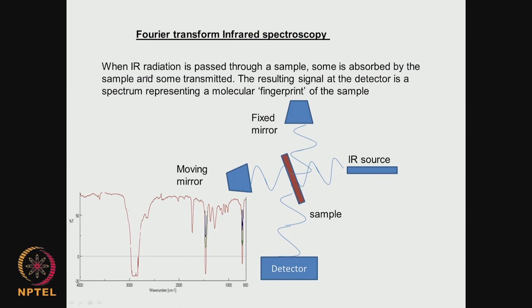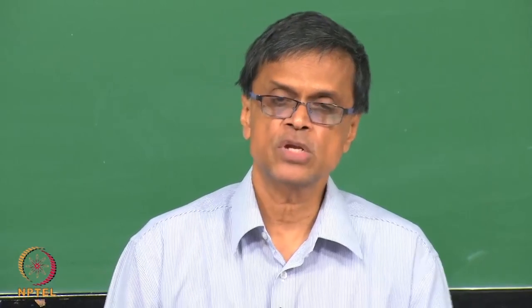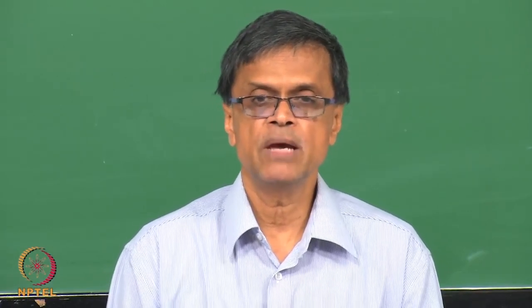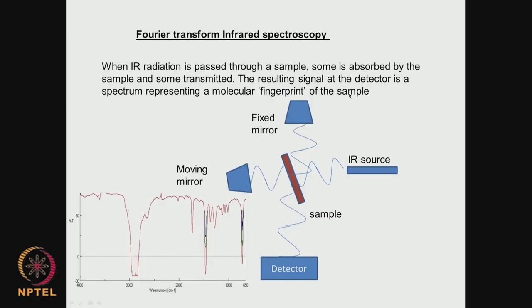When IR radiation is passed through a sample, some is absorbed and some is transmitted. The resultant signal is a molecular fingerprint because atoms connected through bonds start vibrating and bending. These vibrational frequencies are very characteristic of the type of functional groups present. For example, an OH functional group vibrates at a certain frequency, and a ketonic group like C=O is very characteristic.